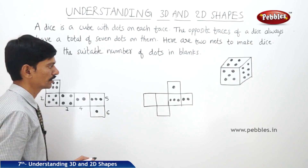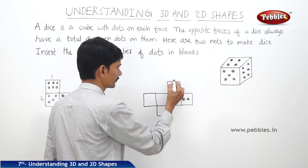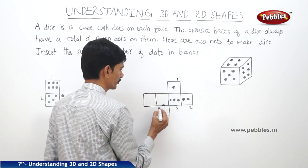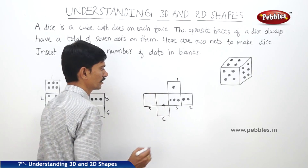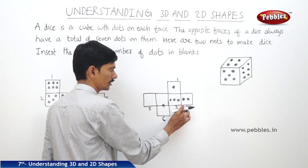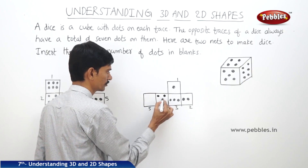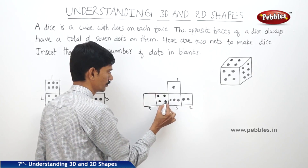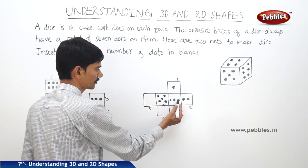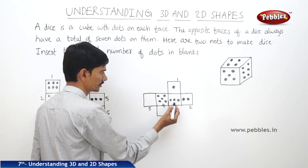Now if you take the second net of a dice, we will give the numbers: one, two, three, four, five, and six. Face two and four are the opposite faces. As face two has two dots, then face four will have five dots on it — one, two, three, four, five. Now face three has three dots on it, so its opposite face five will have four dots, because three plus four is seven.